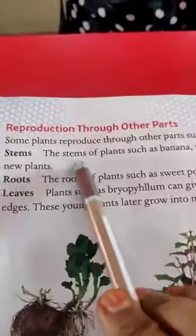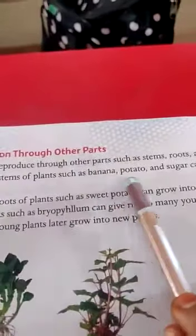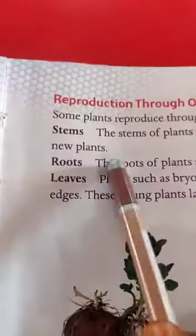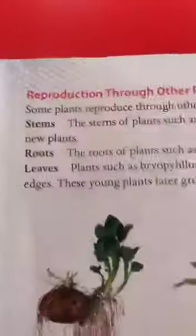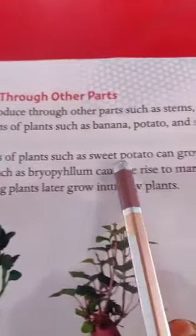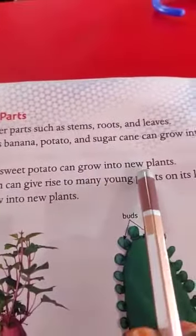The stem of plants such as banana, potato and sugar cane can grow into a new plant. The roots of plants such as sweet potato can also grow into new plants.